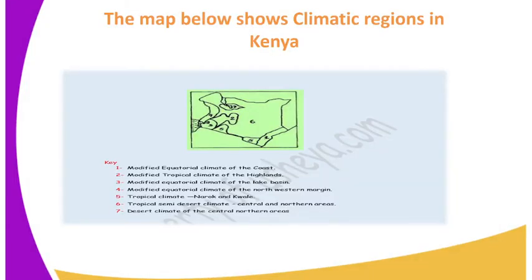On the screen is the map showing climatic regions in Kenya, and they are numbered. You can use the key to navigate and know the areas which have been classified.